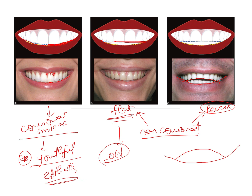Both flat and reverse smile arcs are unaesthetic and can be corrected by adjusting the bracket height on the teeth during bracket positioning. This adjustment can bring about extrusion of the maxillary central incisors, placing them at a lower level so that the smile arc becomes consonant.